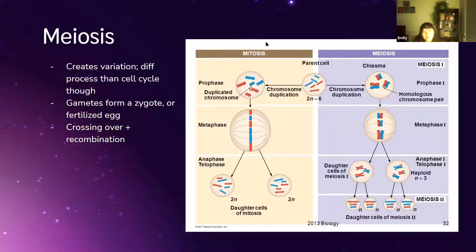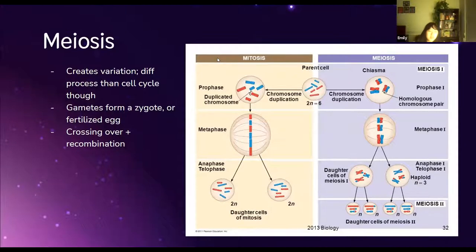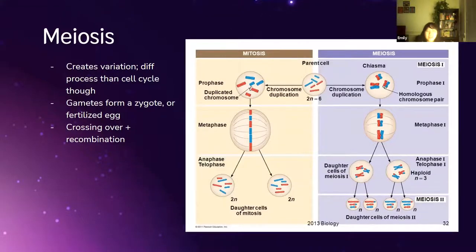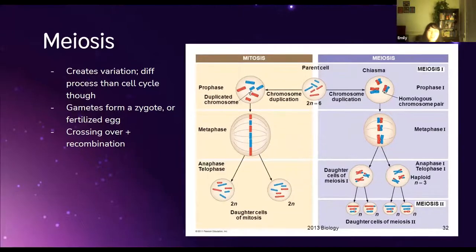In mitosis, the cell replicates its chromosomes. If a cell originally has 2n chromosomes and doubles that amount, it has 4n. And since mitosis produces two daughter cells, 4n divided by 2 means each cell gets 2n chromosomes.